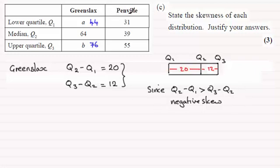So we look at Penville and we do much the same kind of thing. So Penville, we look at Q2 minus Q1, so Q2 minus Q1. And that is going to be 39 minus 31, which is 8. And then we look at Q3 minus Q2, so you've got 55 minus 39, which is 16.